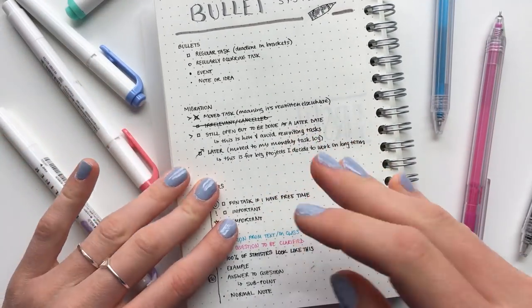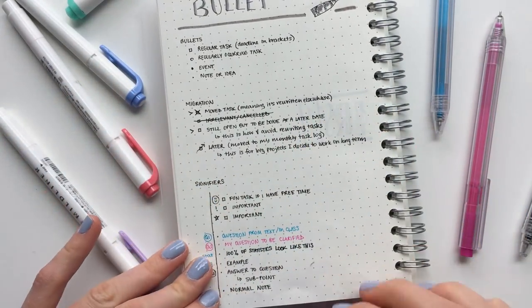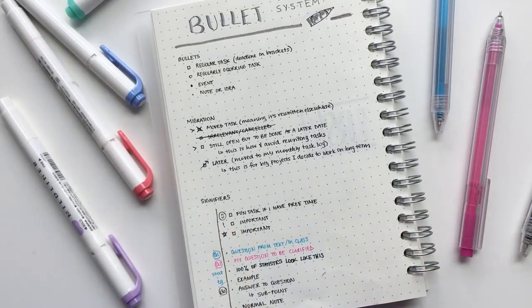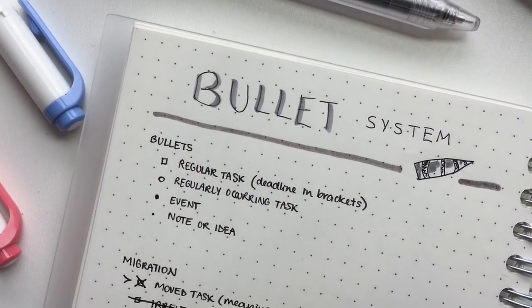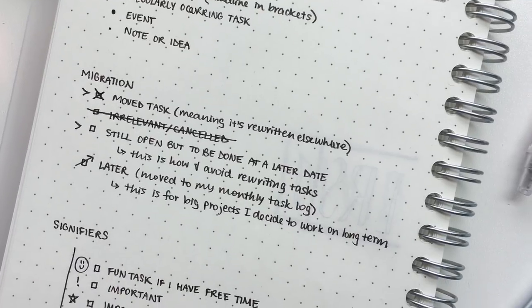Hello! My bullet system is universal, which means that I use the same method for my bullets, migration, signifiers,